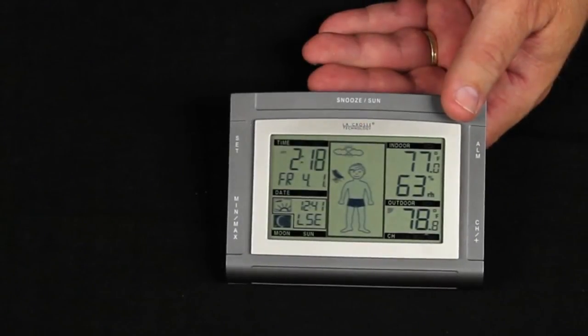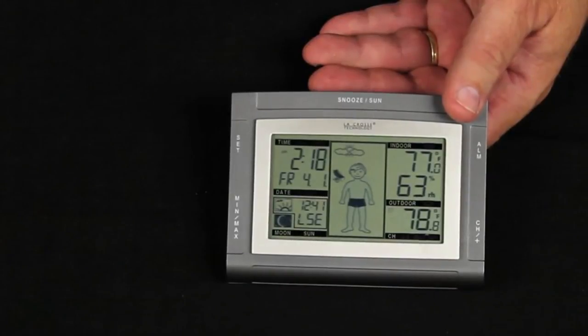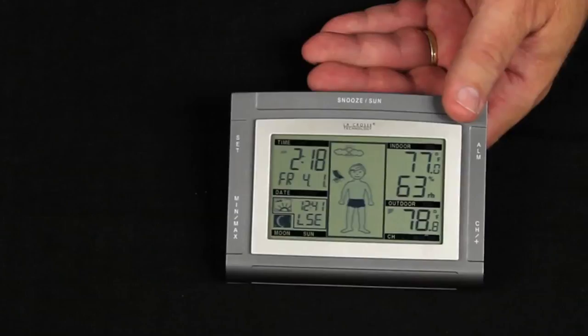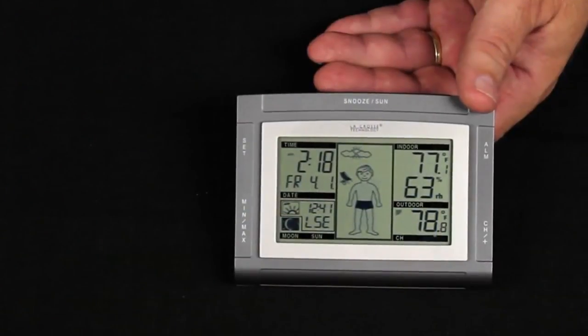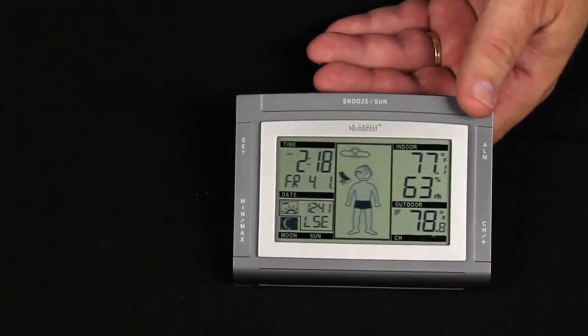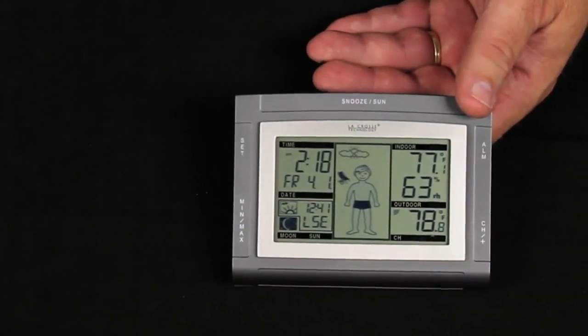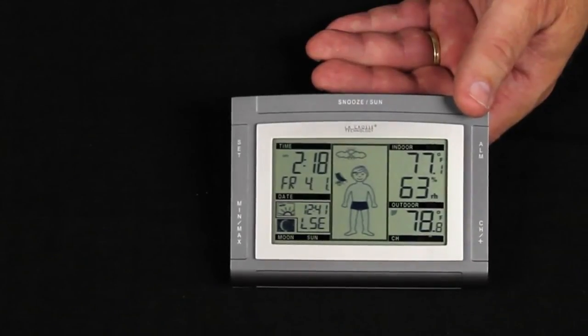Our forecast icon is Oscar. Oscar will change his clothes as the temperature changes and the pressure. Right now, Oscar is saying, wow, it's 78, almost 79 degrees outside. So he's got his easy chair out, he's got his swim trunks on, and he's ready to enjoy the afternoon.